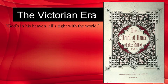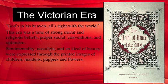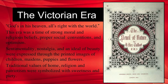The long reign of Victoria, who ruled the United Kingdom of Britain and Ireland from 1837, spanned most of the 19th century. 'God's in his heaven and all's right with the world' was a popular motto of the day. The Victorian era was a time of strong moral and religious beliefs, proper social conventions, and optimism. The Victorian search for design spirit sought to reflect the spirit of the day. Often, contradictory design approaches and philosophies mixed together, as seen in this image from the cover of the Pencil of Nature, where you have a heavy, dark gothic print with a very ornate border. Sentimentality, nostalgia, and ideals of beauty were expressed through printed images of children, maidens, puppies, and flowers. Traditional values of home, religion, and patriotism were symbolized with sweetness and piety.